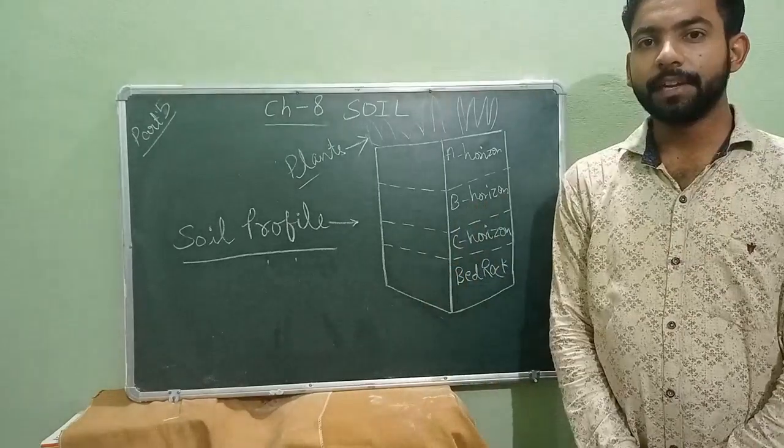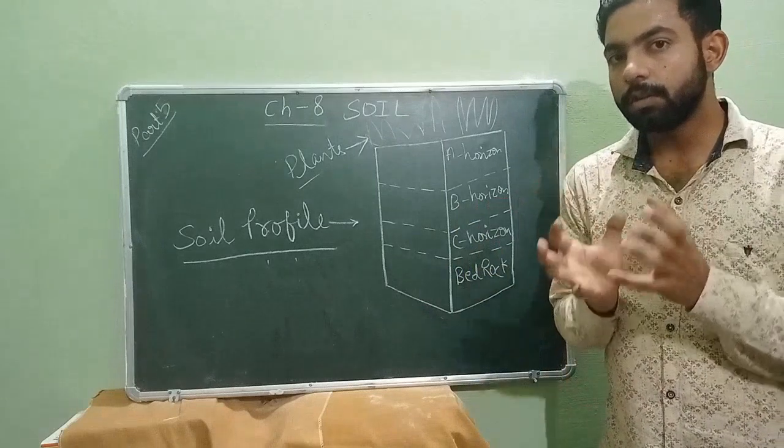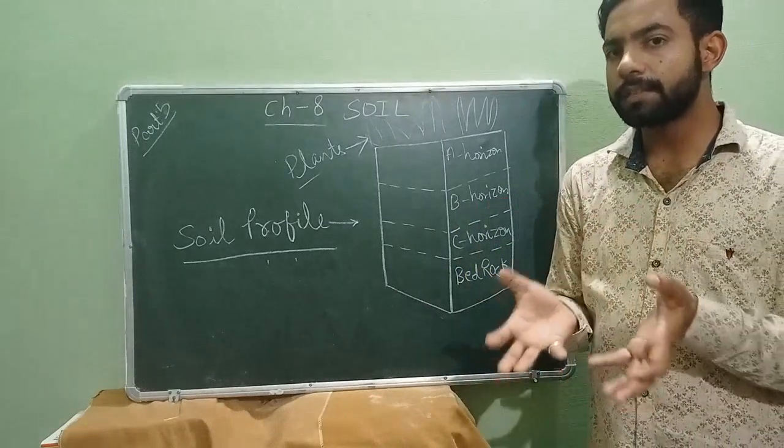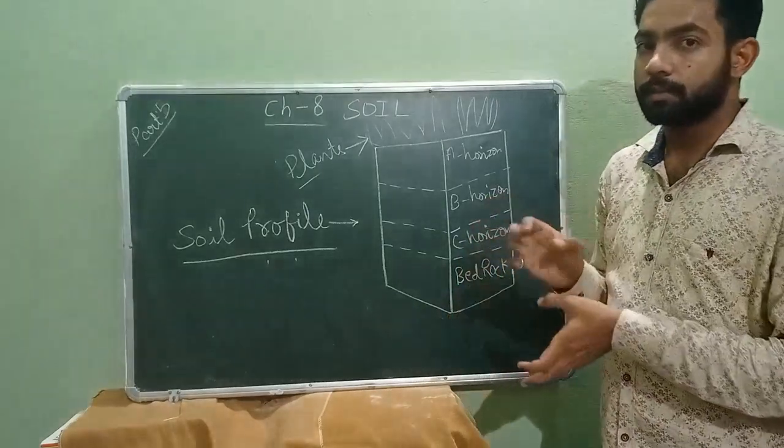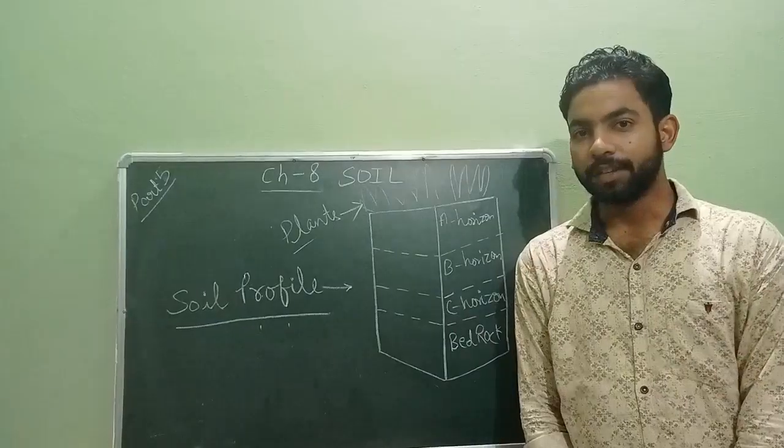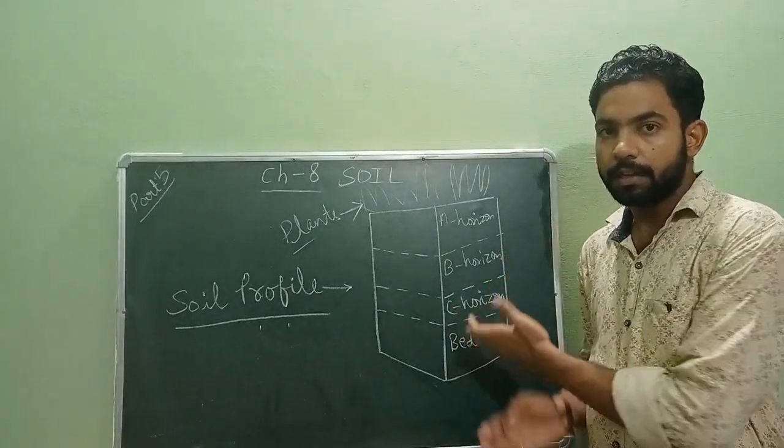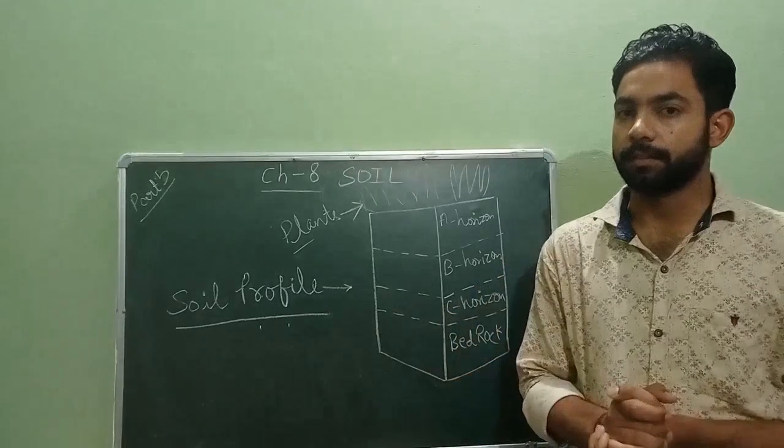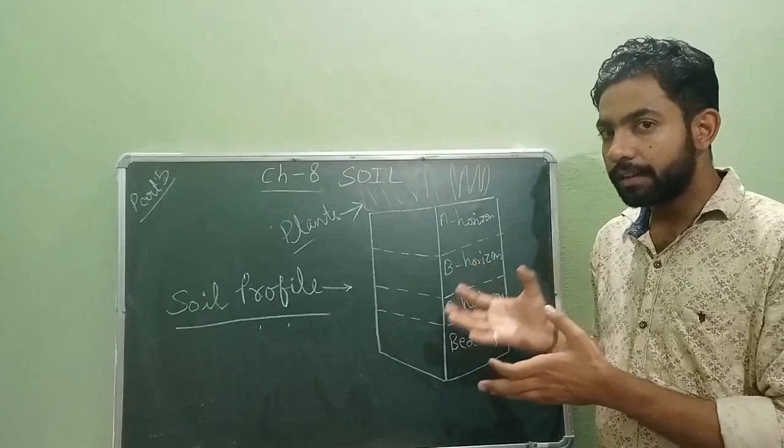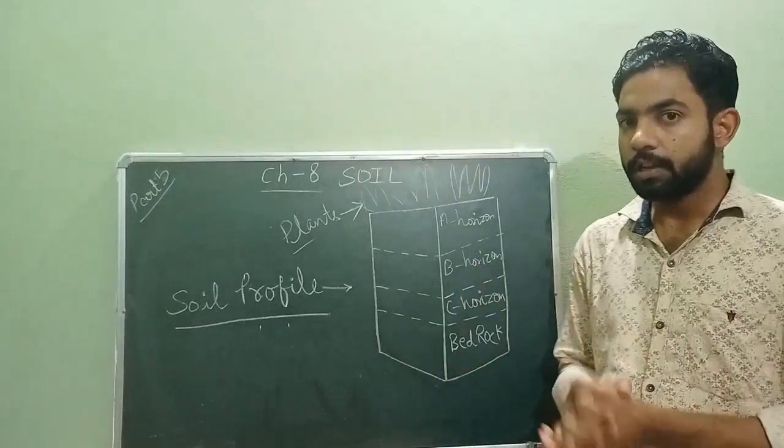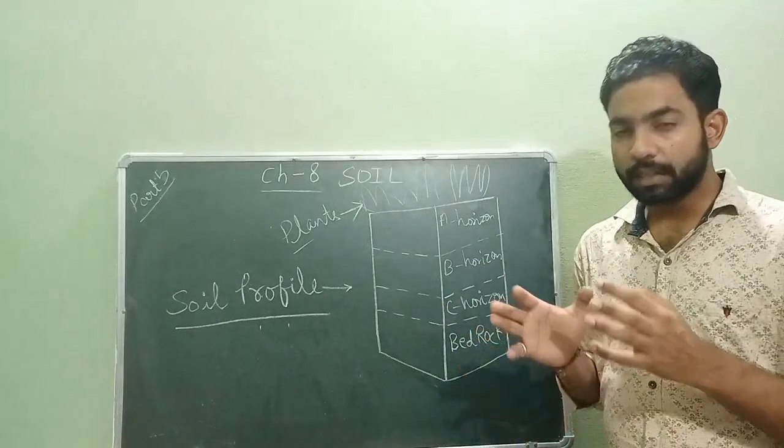C horizon: The layer of soil just below the B horizon. It is made up of small rocks or small lumps of rocks. It extends to the lowest portion which is called bedrock. D horizon: The layer immediately after the C horizon is bedrock. It is also known as D horizon. This is very hard and very difficult to dig. Rocks and minerals are found in this layer. Rocks are porous and can store water.